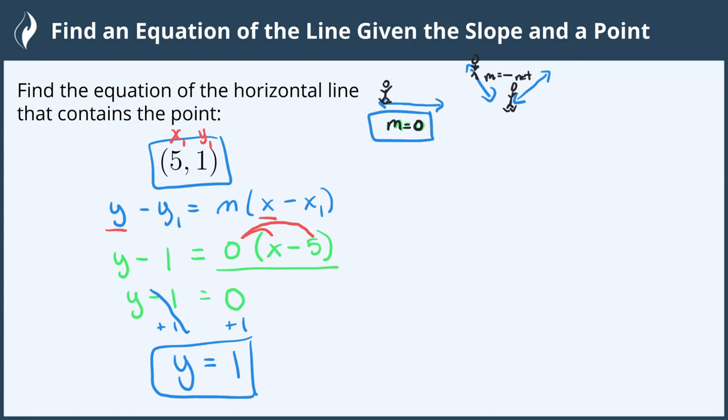Some of you may remember that horizontal lines always have the form of y equals a number. So a faster way of doing this is if we are told that the line is a horizontal line, we can just start out by putting y equals and find the y value of the ordered pair. And that way is a little bit more intuitive and faster.